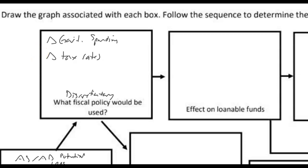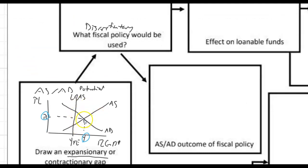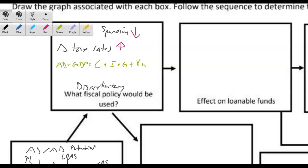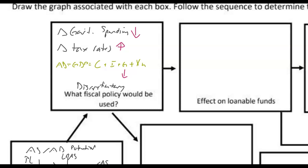Because we're in an expansionary gap, what we're trying to do is resolve this — we want there to be a cool down. We're currently producing too much. For government spending, we can decrease government spending. For tax rates, you can increase tax rates. Aggregate demand equals GDP, and GDP is C plus I plus G plus net exports. If the government spends less money, you spend less. If there's an increase in tax rates — probably personal household taxes — that's going to decrease disposable income. So we have a decrease in C and a decrease in G, which leads to a decrease in aggregate demand.